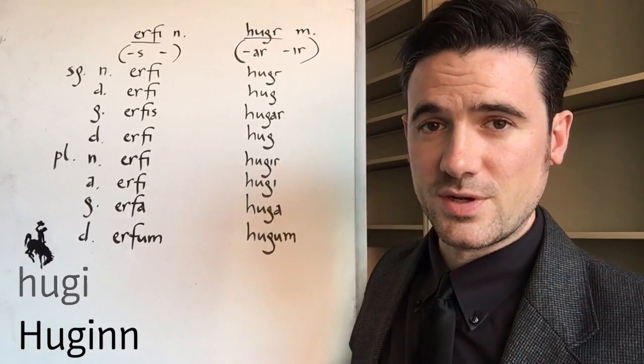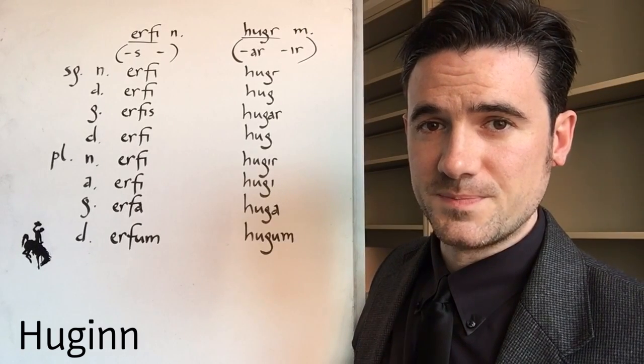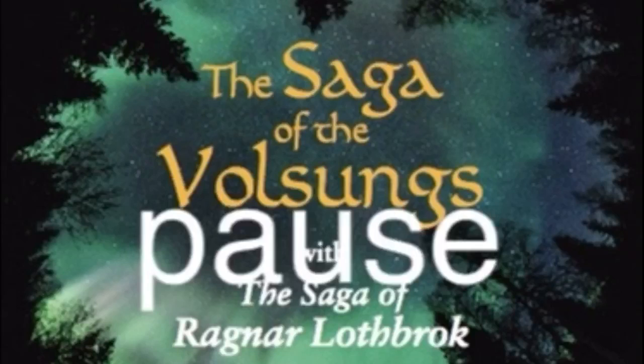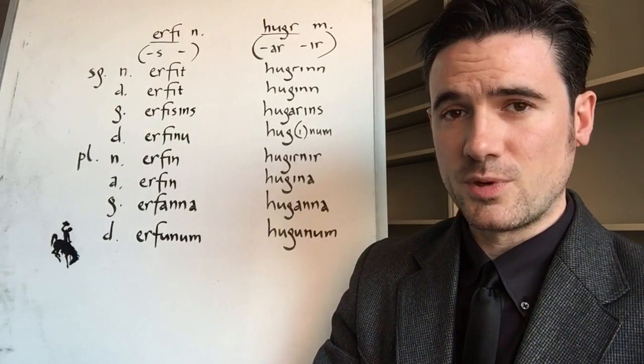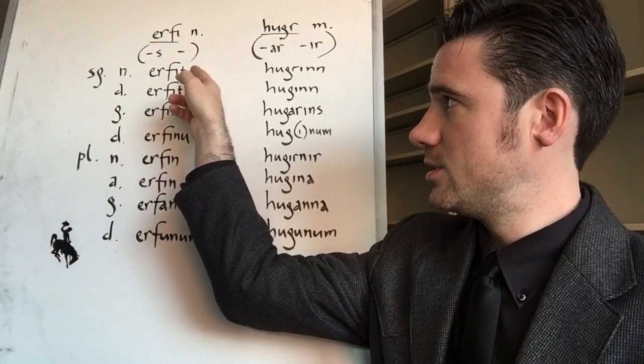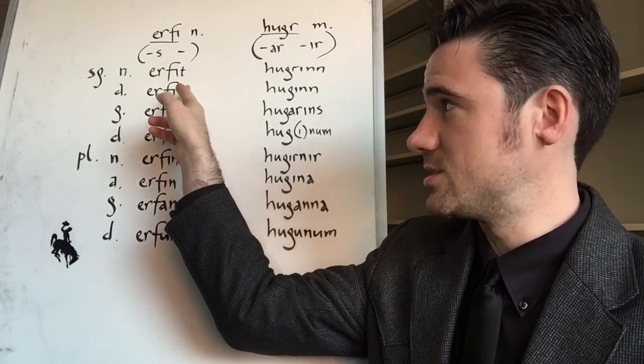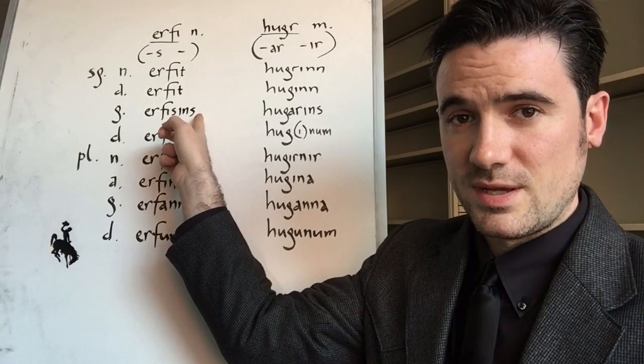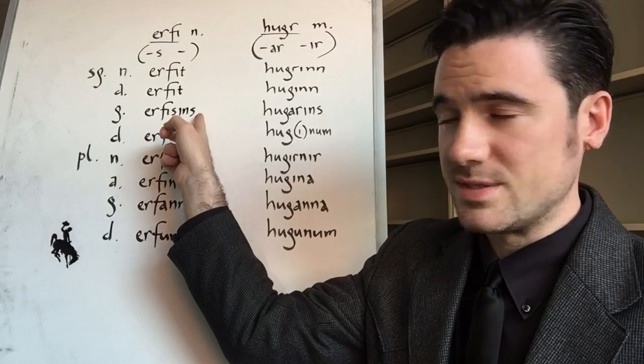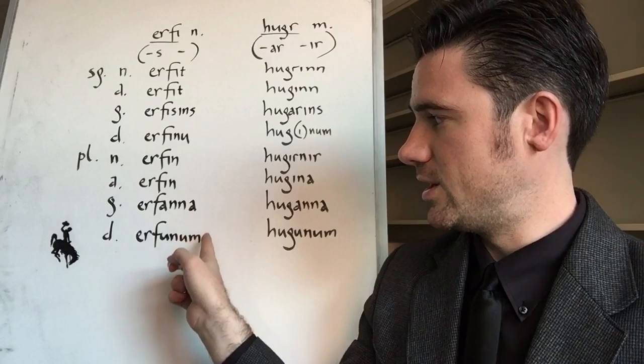Now see if you can add the definite article forms and their correct forms to these nouns. One, two, three, pause. How did you do? Well, in the neuter singular, we're going to add T to the neuter nominative and accusative singular, ERFIT, ERFIT. We're not going to bring the vowel of the definite article with us, because this already ends in a vowel. We are going to have the vowel in the genitive singular, because that form does end in a consonant, so ERFISINS, ERFINU, without bringing the vowel with us, ERFIN, ERFIN, and our typical ERFANA, ERFUNU.